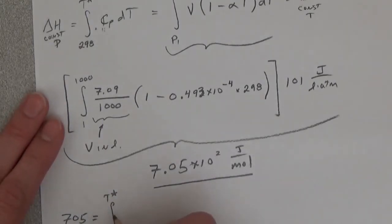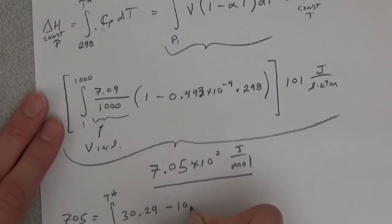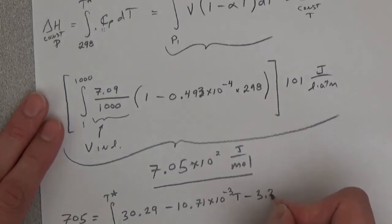And then the heat capacity of copper is given, so that is 30.29 minus 10.71 times 10 to the minus 3 T minus 3.22 times 10 to the 5 T to the minus 2 dT.